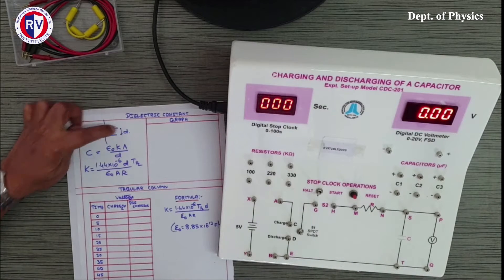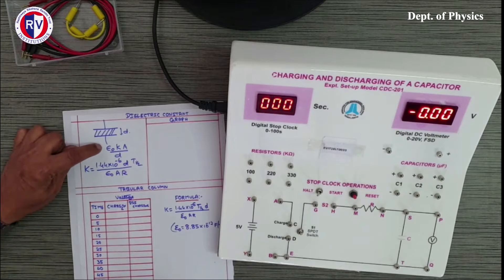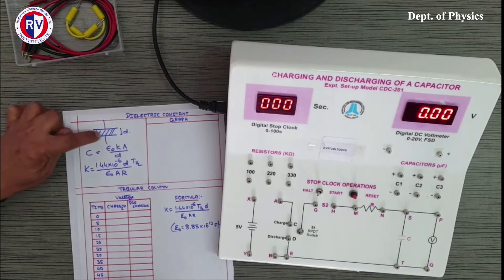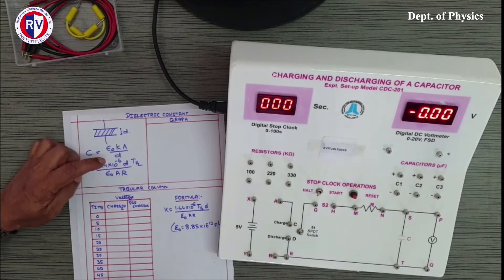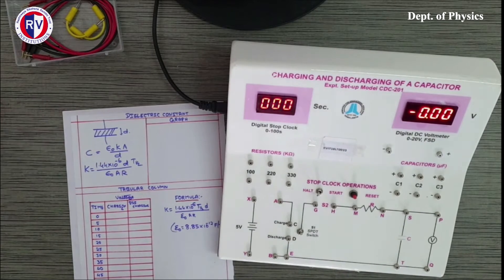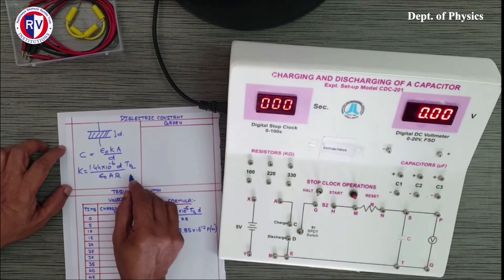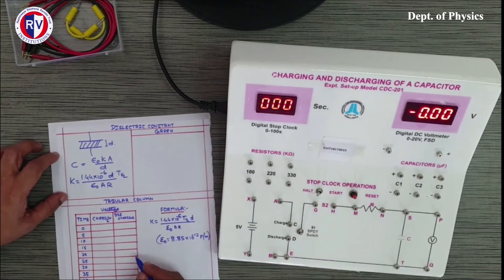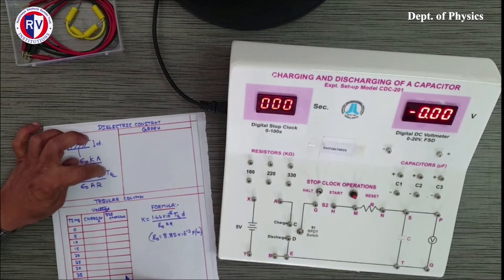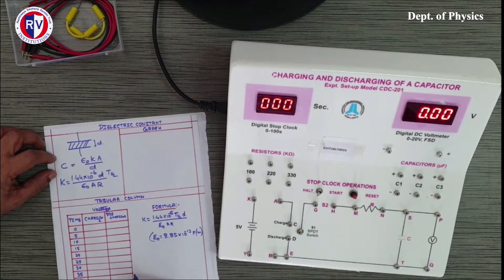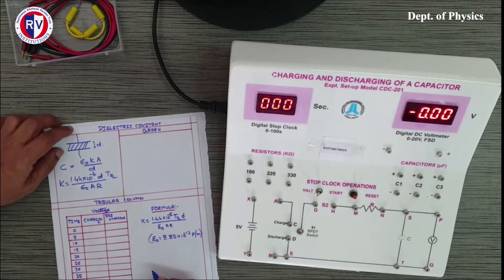The equation can be reduced down to k equals 1.44 times 10 to the power minus 6, d t_half by epsilon_0 A into R. d is the thickness of the dielectric, epsilon_0 is the permittivity of free space, A represents the area, and R is the resistance, usually a high resistance value is used. T_half is the quantity we are going to find out from the experiment.